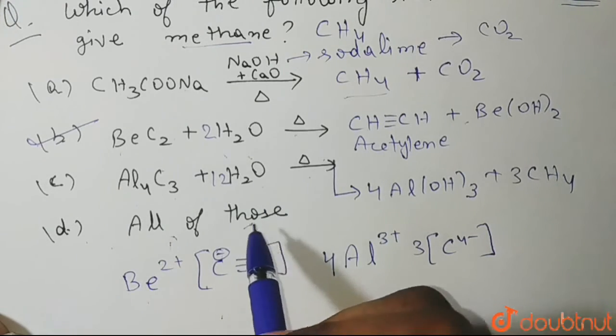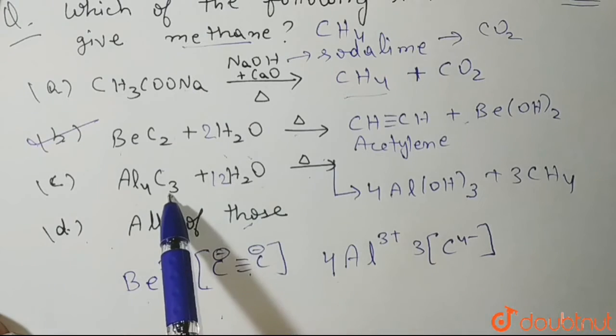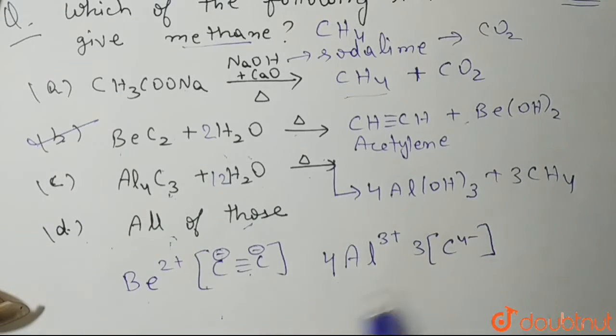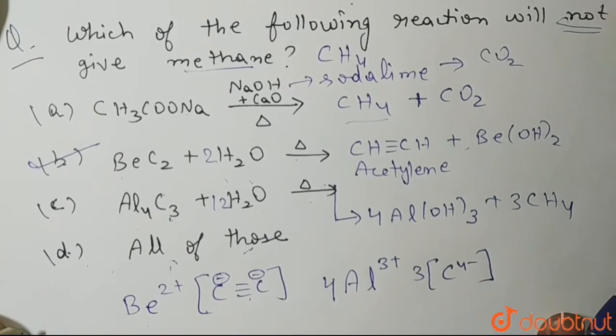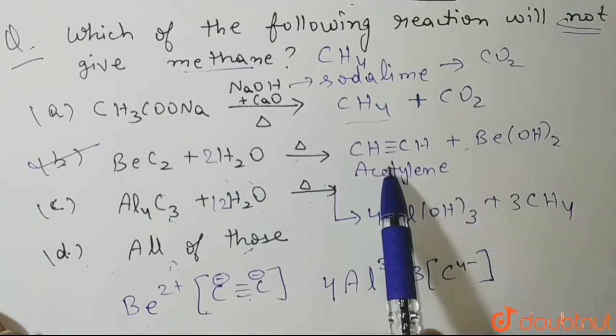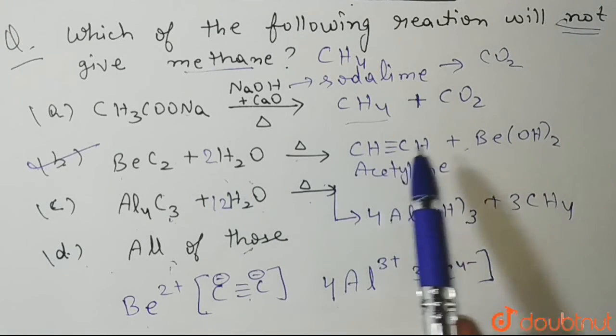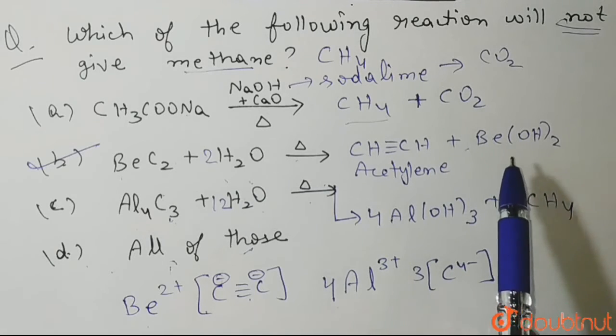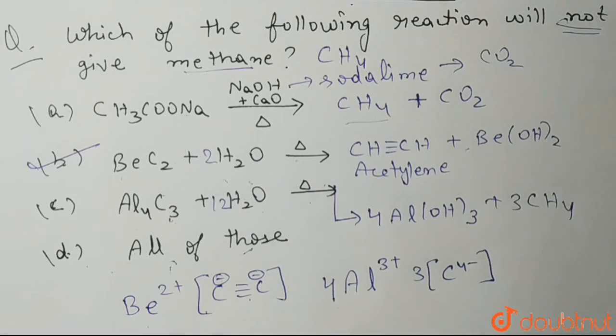And d, all of these is of course incorrect because two options are wrong answers. Whenever we treat beryllium carbide with water, we will not get methane molecule. We will get acetylene and beryllium hydroxide. I hope you understood. Thank you so much.